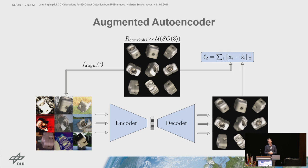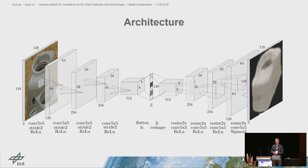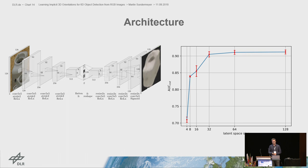Our architecture is a convolutional autoencoder with a 128-dimensional latent space. We determined the appropriate latent dimensions empirically — at 128 dimensions, the test performance saturates. Training takes about three hours per object on a GPU.